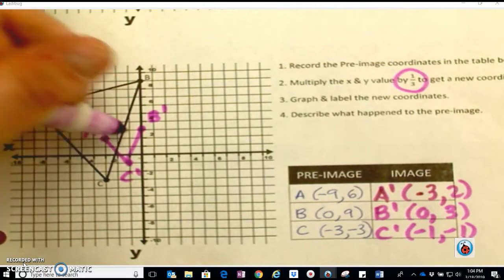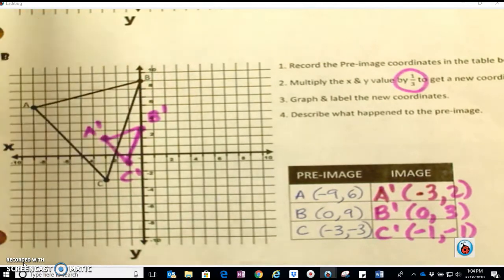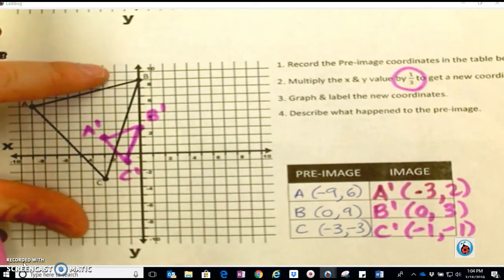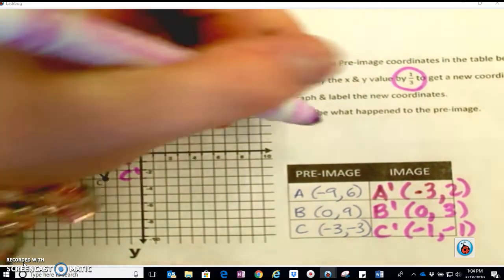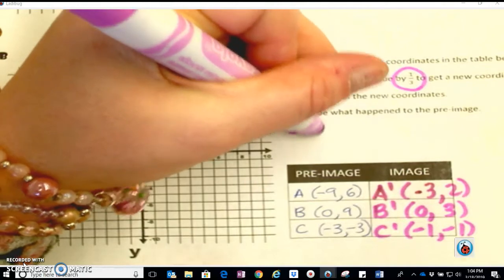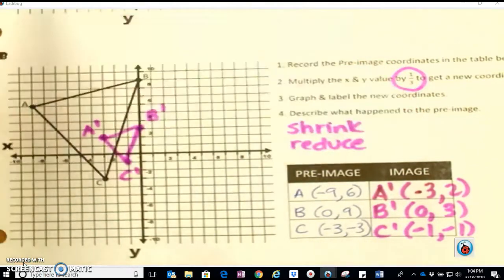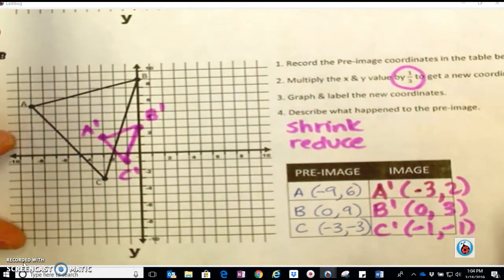Don't really need my ruler for this one because it's tinier. Since we can see what happened, it was a large shape, and now it's a small shape. So it shrunk. You could say it reduced, got smaller. All those words work.